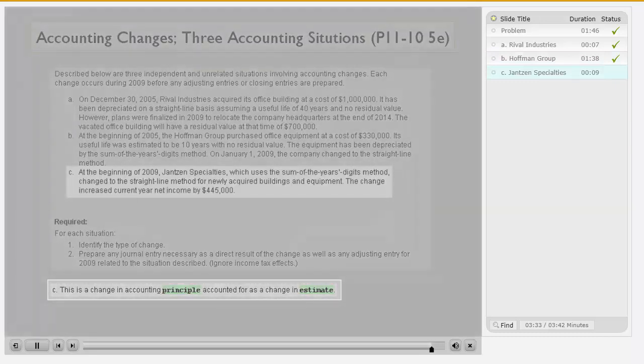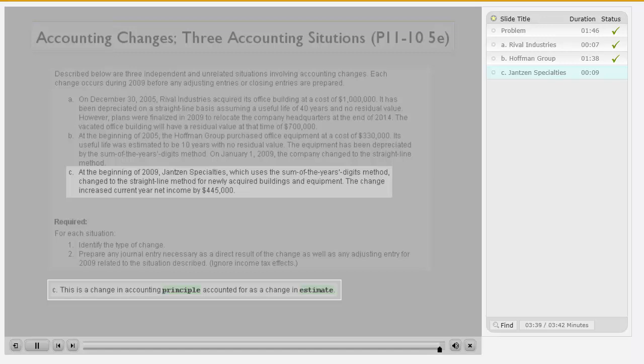Situation C is simply a change in accounting principle that's accounted for as a change in estimate. There's no extra journal entry required here.